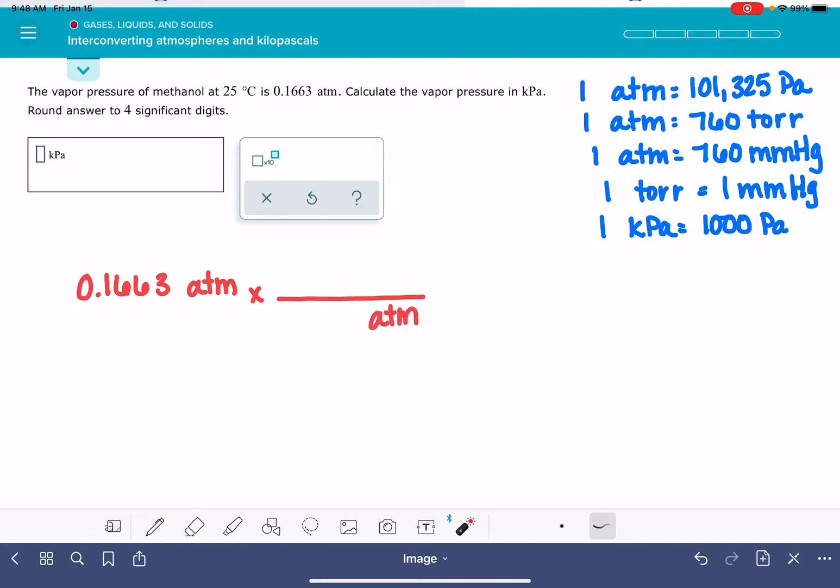There's a lot of other information in this problem. It's given us a temperature. That's information that we do not need to solve this problem. It's talking about vapor pressure. You might not even know what that is. Again, don't even need to worry about that. This is really just a unit conversion problem, converting atmospheres into kilopascals.